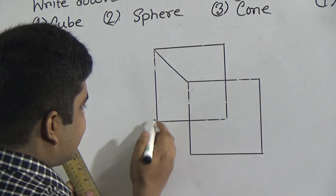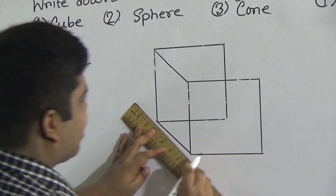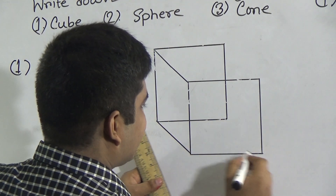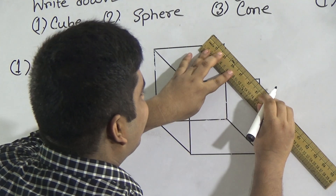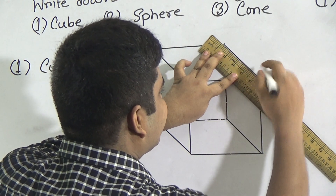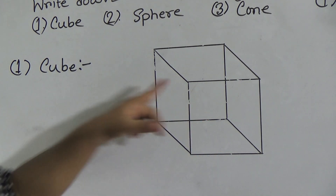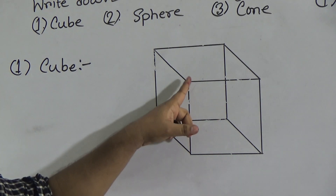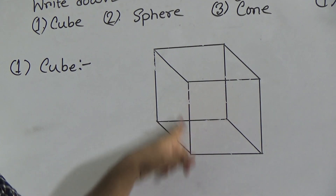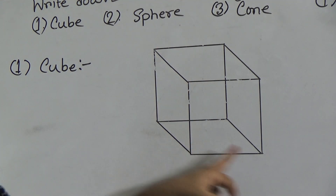And this corner point with this corner point, this corner point with this corner point. My dear students, what is this? This is a cube. To draw a cube, at first we draw a square, after that using the midpoint of the square we draw another square, then we add the corner points of the two squares.